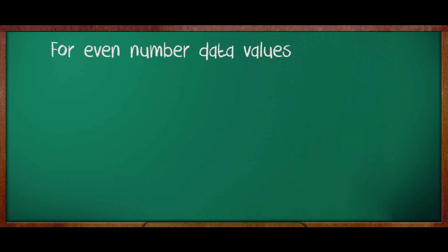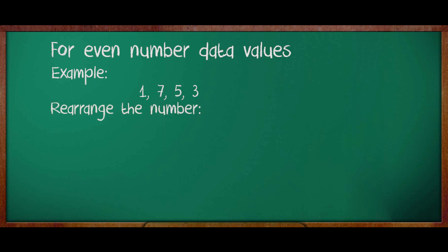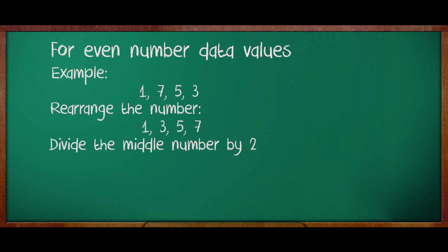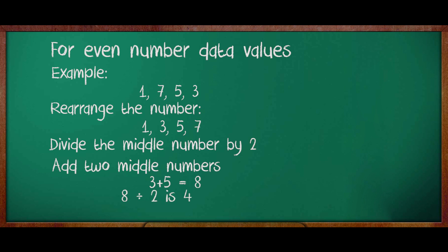Now, let us find the median for even number data values. For example, the data values are 1, 7, 5, 3. Here, what you need to do is rearrange these numbers in ascending order or descending order. The next step is you have to divide the middle values or the middle numbers by 2. The middle numbers are 3 and 5. When we add 3 and 5, we get the sum as 8. This 8 should be divided by 2. The final answer we got is 4. Therefore, median is 4 in this set of data.